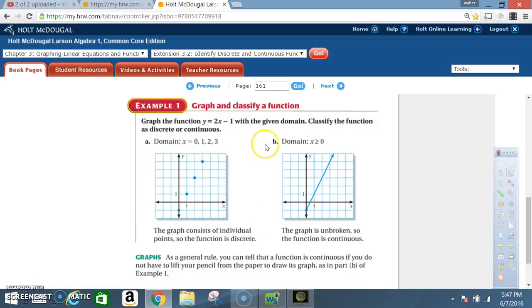Now look at part B. The domain is x is greater than or equal to zero. That means x can be any value between zero and infinity. X can be 0.5, x can be 1, x can be 1.5, x can be 2, 2.1, 2.3, 2.4. So x can be anything, that means all the values count.